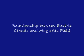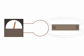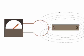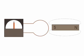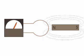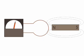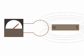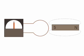This law shows the relationship between electric circuit and magnetic field. Faraday found that when an electrical conductor is brought under the influence of a magnetic field, and if the flux linked with the conductor due to this magnetic field is changed, an EMF is induced in the conductor.